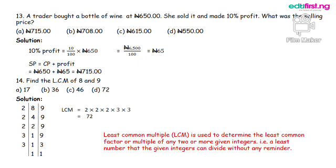Selling price equals cost price plus profit. That is 650 plus 65 Naira. And that will give us 715 Naira. And option A is the correct answer.